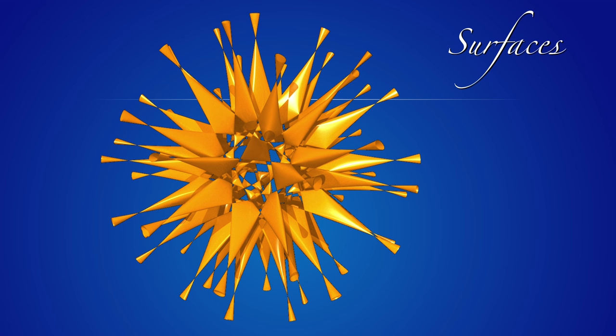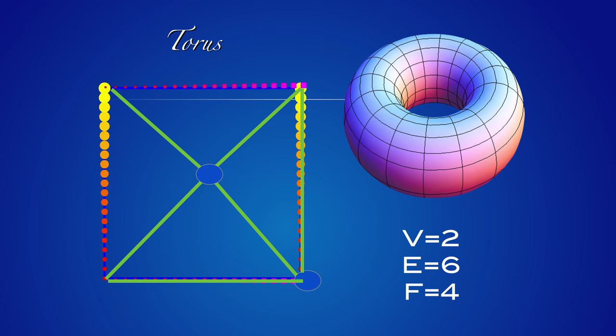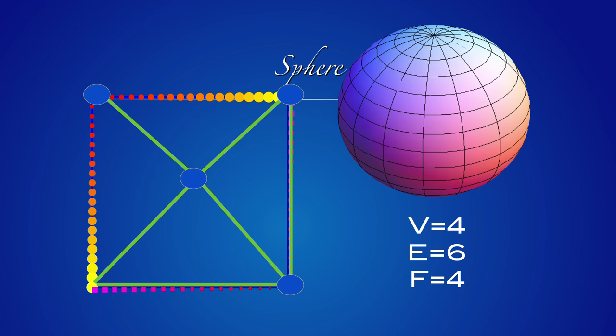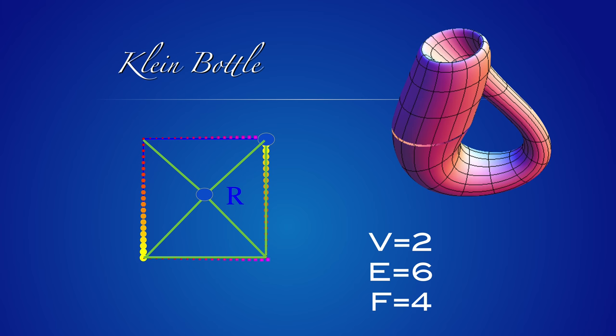Topology allows us to investigate surfaces. We can look at the Euler characteristic in two dimensions and distinguish surfaces. Here is a triangulation of the torus — we can count the number of vertices, number of edges, and number of faces. In the torus case we get zero. For the sphere, the answer is two — this is the reason why in the Euler polyhedron formula we always get two. These polyhedra are discrete spheres. Here is the Klein bottle — the Euler characteristic is zero.